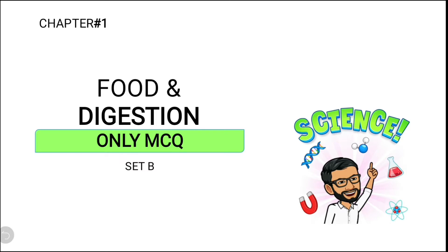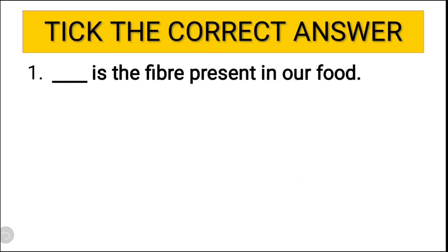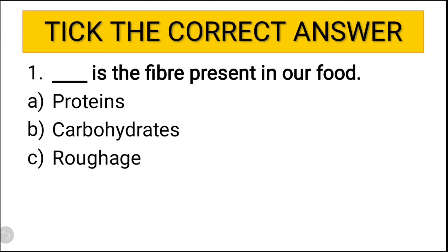So let us start with the first MCQ for today. Dash is the fiber present in our food. The options are proteins, carbohydrates, roughage, water. So what is the correct option? What is another word for fiber which is present in our food?